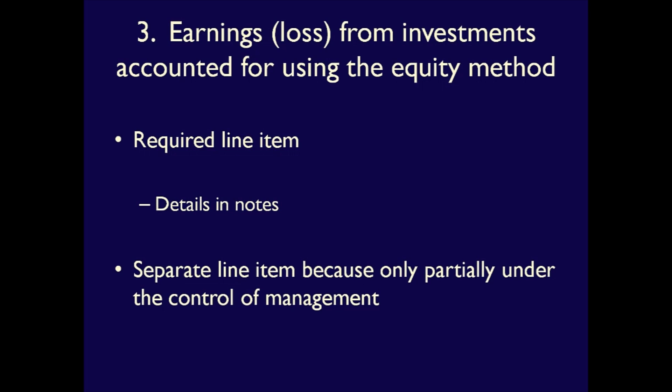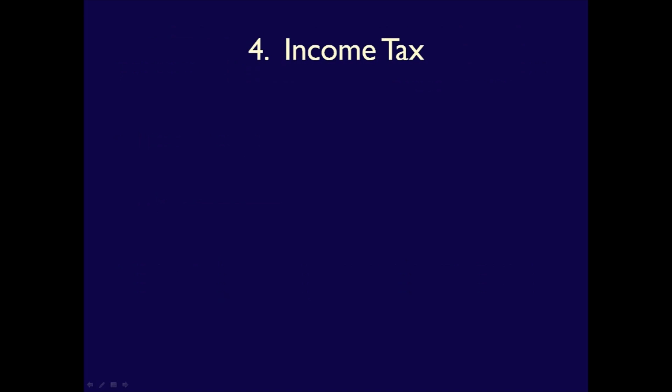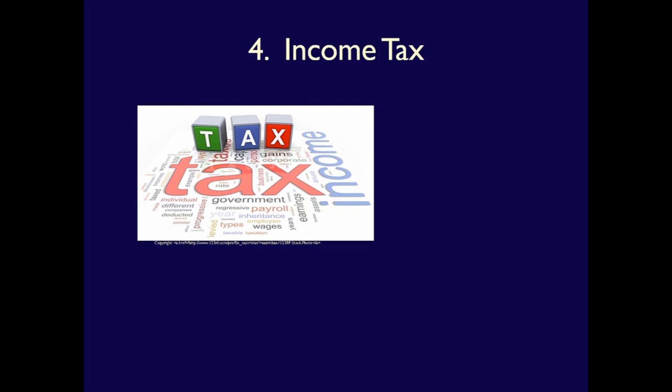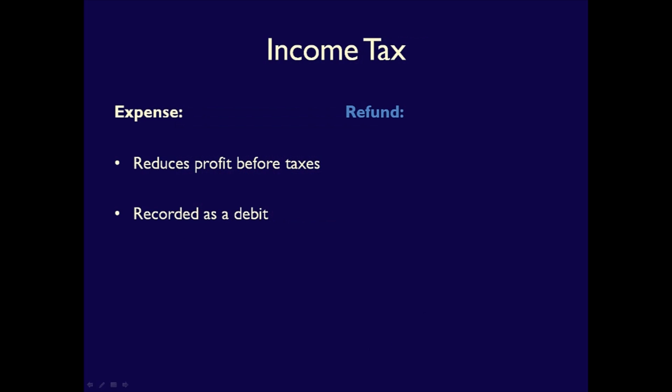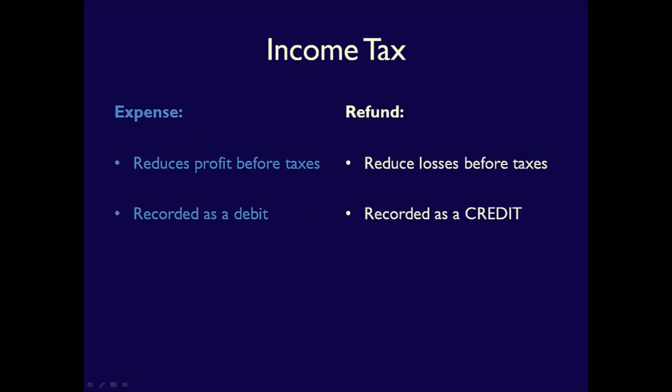This is required because, unlike normal revenues and expenses from continuing operations, these investments are only partially under the control of management — an important factor for shareholders to appropriately assess the profitability of the business. Four is income tax, also a required line item. This is either the income tax expense because the company has revenues greater than expenses, or an income tax refund because expenses are greater than revenues. Income tax expense reduces profit and is recorded as a debit, while income tax refunds are recorded as credits, reducing expenses and functioning similarly to revenue.